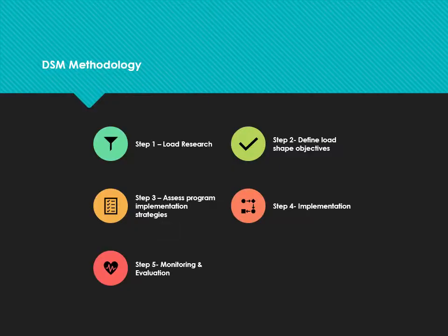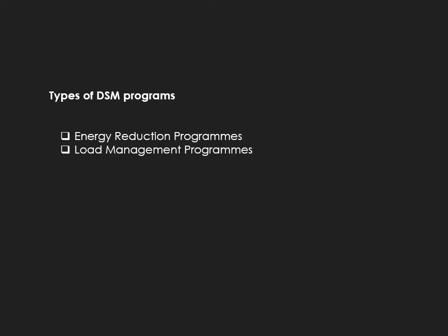The DSM methodology involves five steps you must remember: Step 1 — load research; Step 2 — define load shape objectives; Step 3 — assess program implementation strategies; Step 4 — implementation; Step 5 — multi evaluation. Brief explanations of all these steps are given in the chapter. You may be asked to list or explain these steps.